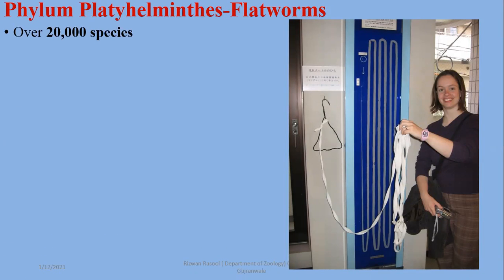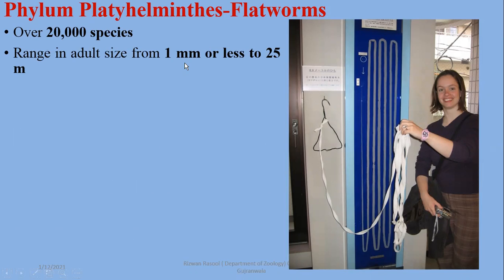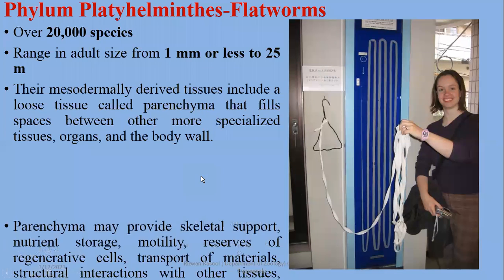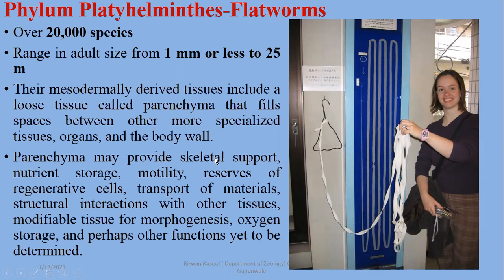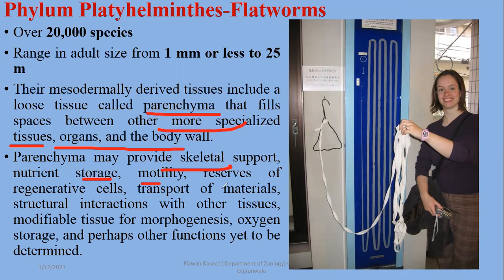Phylum Platyhelminthes general characteristics: there are more than 20,000 species, and body size can range from 1 mm to 25 meters. The largest parasite, the tapeworm, has been reported to exceed 25 meters. They have mesodermally derived tissues, including a loosely organized tissue called parenchyma that fills spaces between specialized tissues, organs, and the body wall. The parenchyma fluid provides skeletal support, storage, motility, reserves of regenerative cells, and transport of materials.